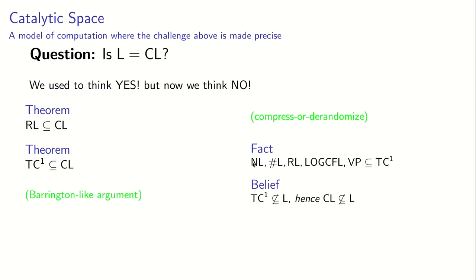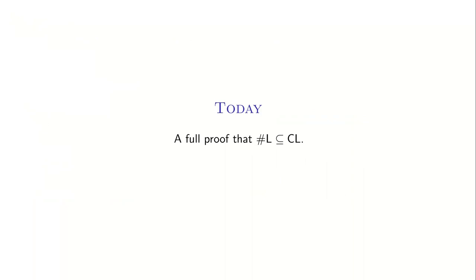Now if you look at all these classes, there is some doubt. People aren't very sure which of these classes are contained in log space. Some people are kind of on the edge on whether NL is contained in log space, but people tend to believe that RL actually is contained in log space. But I think that by the time you reach sharp L — this counting L class — most complexity theorists would tend to think that it already sits outside of log space. And so today we're going to do a full proof that the class sharp L is contained in CL.